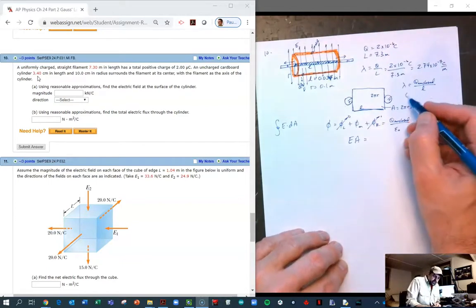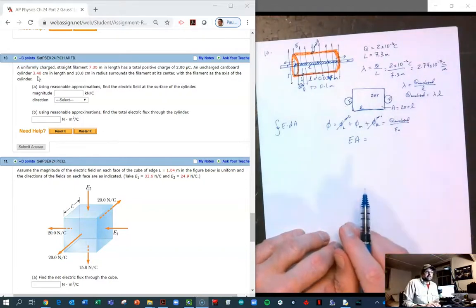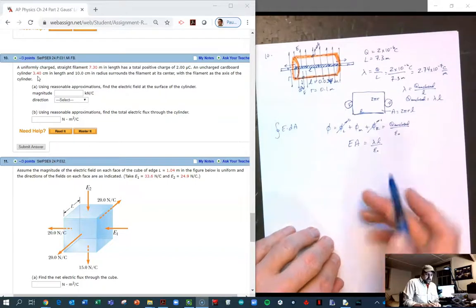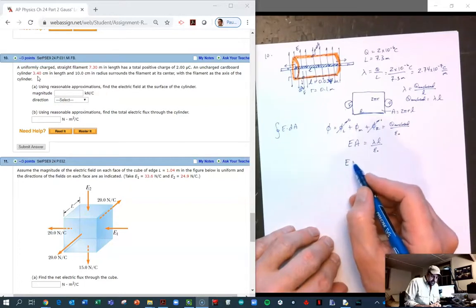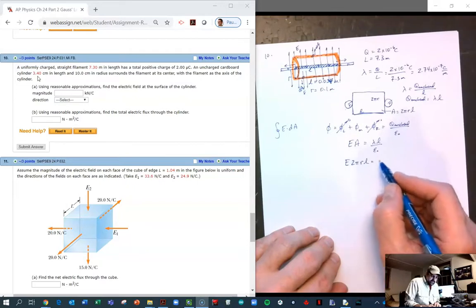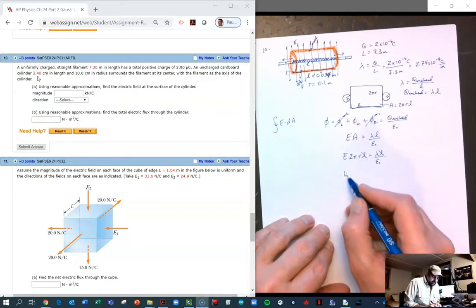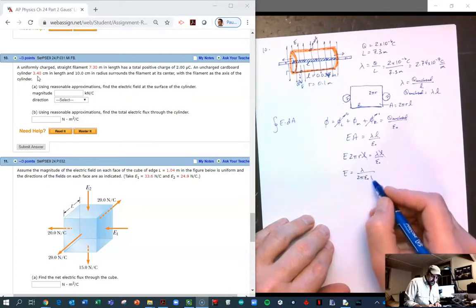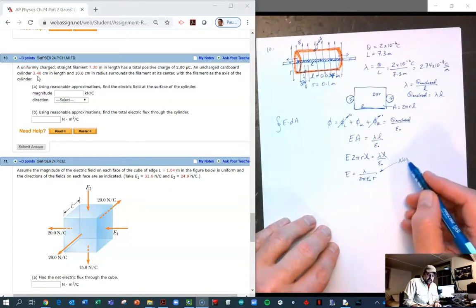Therefore Q enclosed equals lambda times that little tiny length there, so we can plug that in here. Over epsilon naught, our area we just found out was 2πrl times l is equal to lambda l over epsilon naught. The l's cancel, and we're going to calculate what our E is here, just solving for E. Notice this is 1 over r dependence—this is not like a point mass.